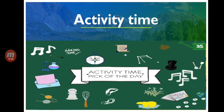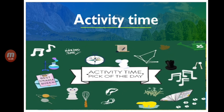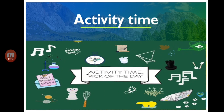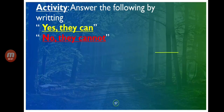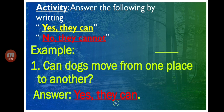Did you understand our topic about how living things move? Now let's have a short activity — only three items. Answer the following by writing 'Yes, they can' or 'No, they cannot.' Here is an example: Can dogs move from one place to another? The correct answer is: Yes, they can. Please prepare your notebook and pencil and write numbers one to three.